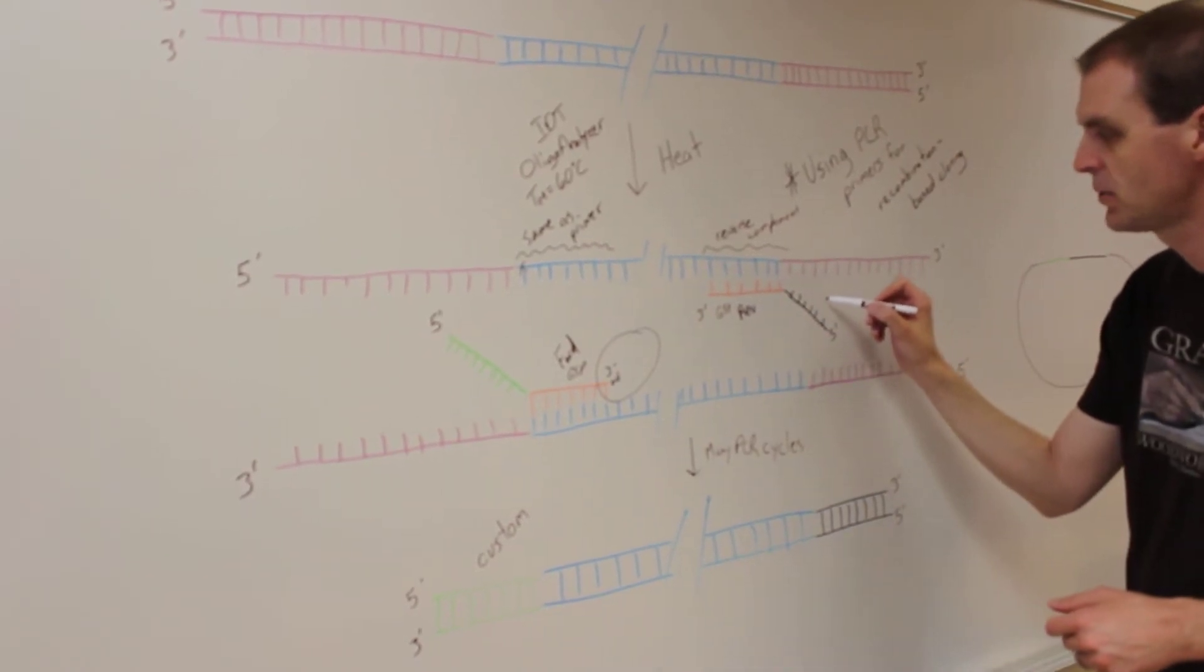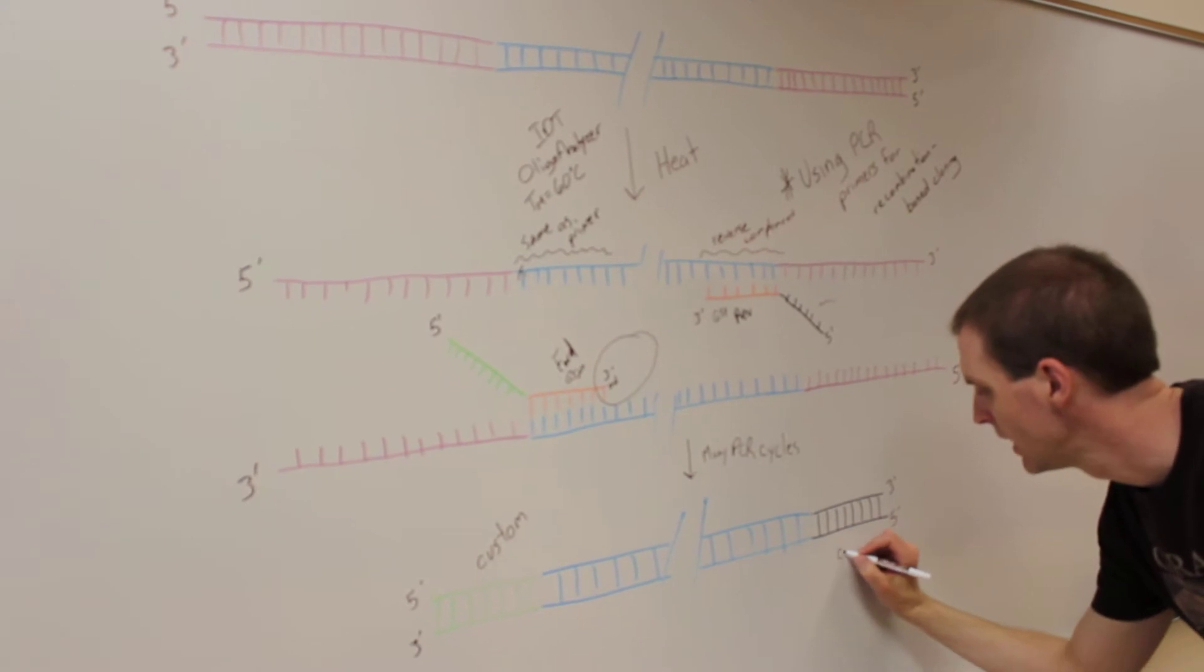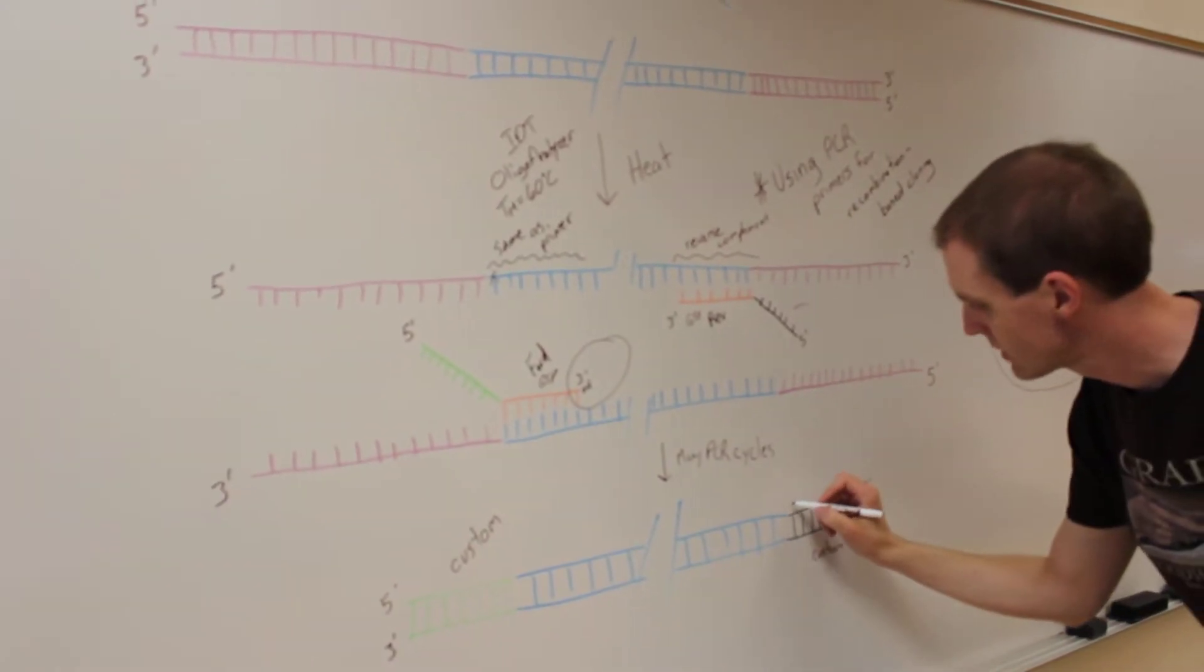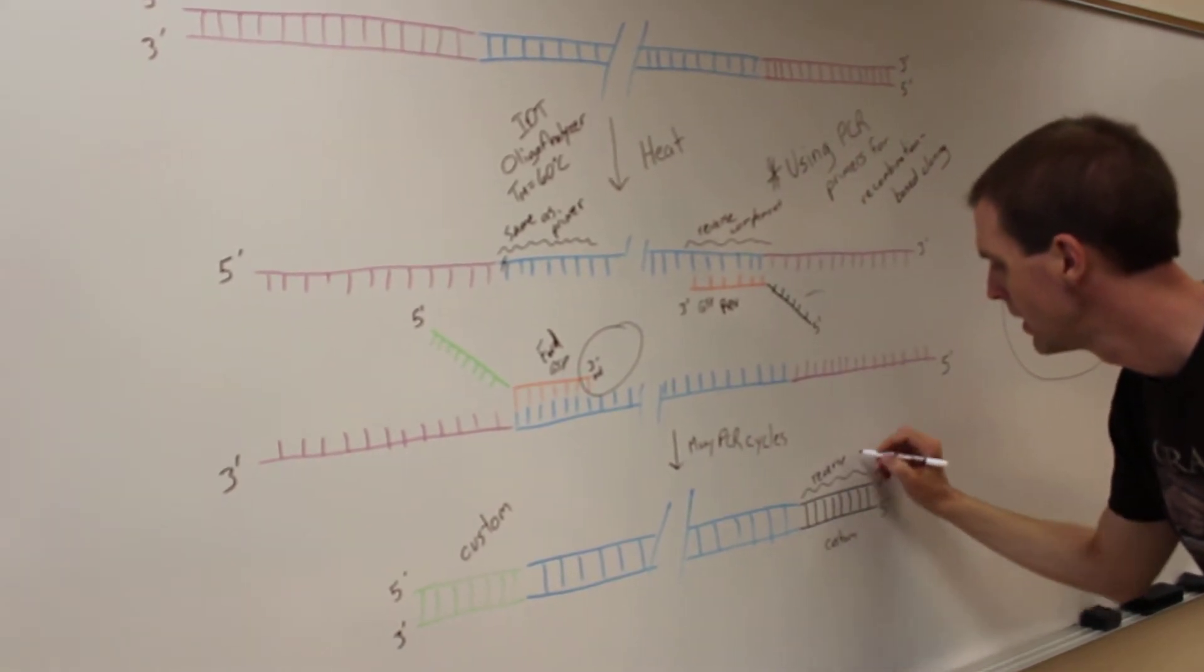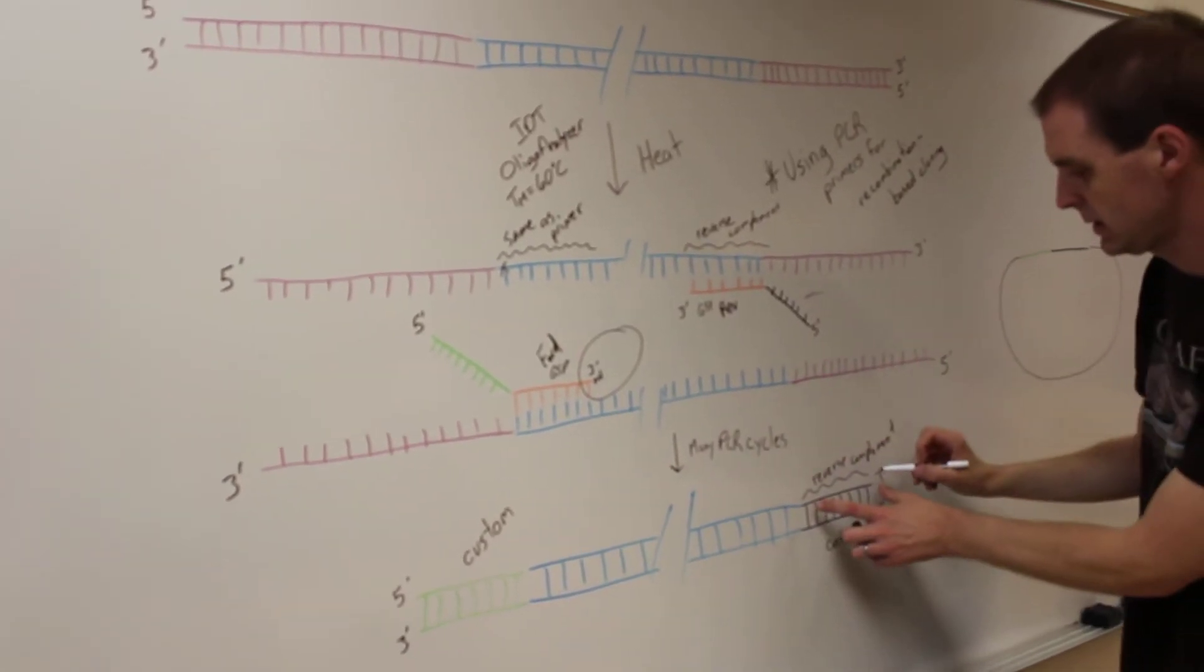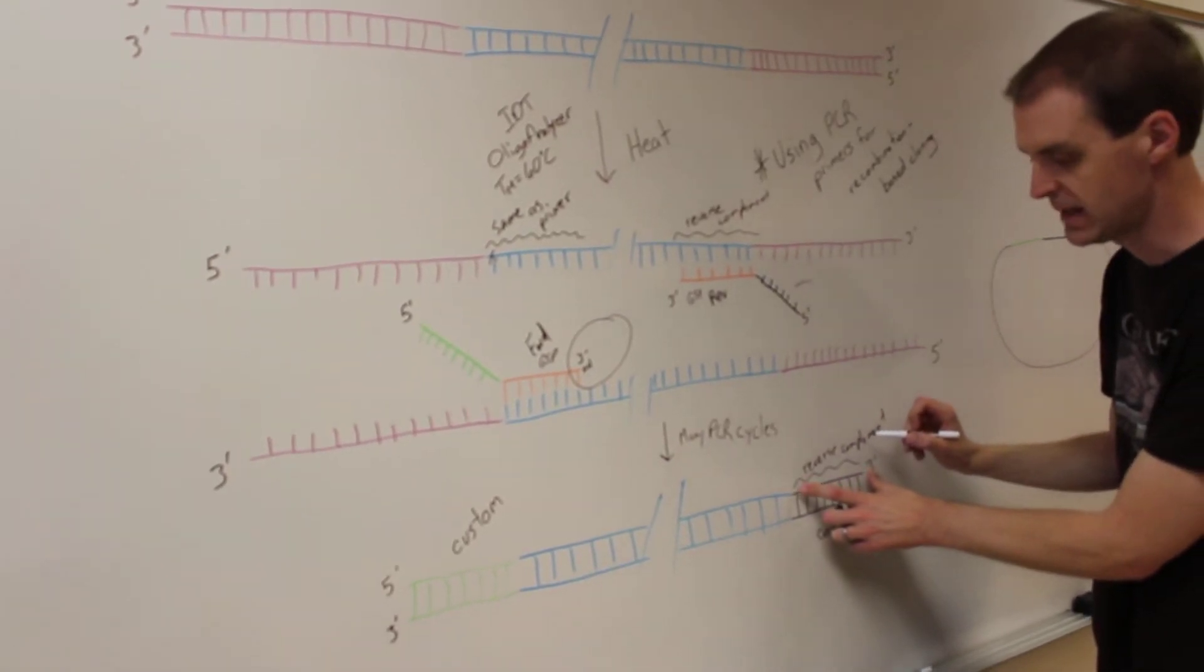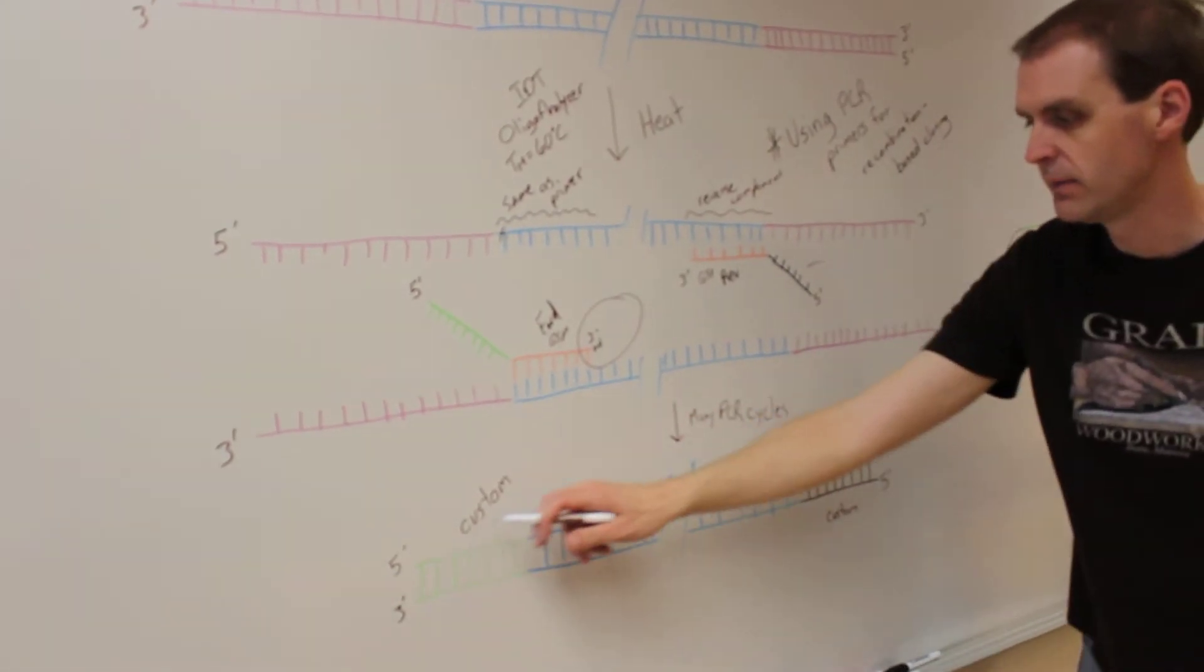The same thing is true for this extra sequence. You are designing the custom sequence here, but it's going to be the reverse complement to whatever will be the top strand sequence at the end of your gene here. So it will be the 3' end of your top strand.